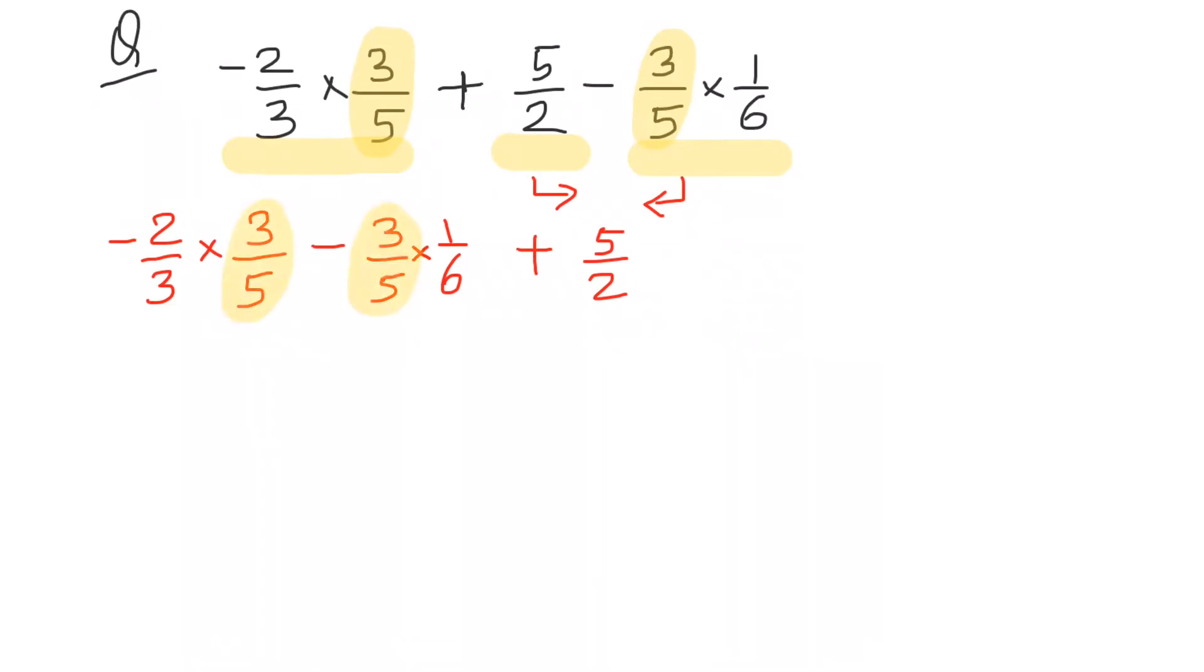So we use distributive property and take out common, so that we write three upon five multiplied by the remaining numbers inside the bracket. So remaining number is minus two upon three minus one upon six.